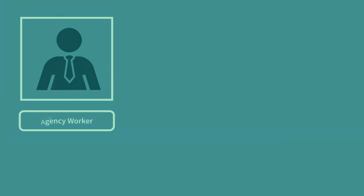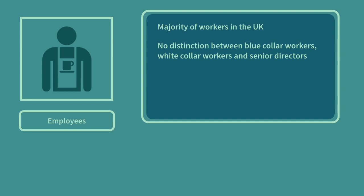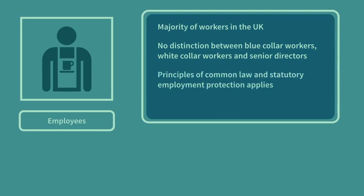The majority of workers in the UK are employees of the company to which they provide their services. Unlike in some EU countries, there is no legal distinction between blue-collar workers, white-collar workers, and senior directors, other than whatever may be written into their employment contracts. The basic principles of common law and statutory employment protection legislation apply to all employees regardless of their status. As long as they satisfy the relevant qualifying conditions, employees will benefit from greater statutory employment protection rights than independent contractors and agency workers.